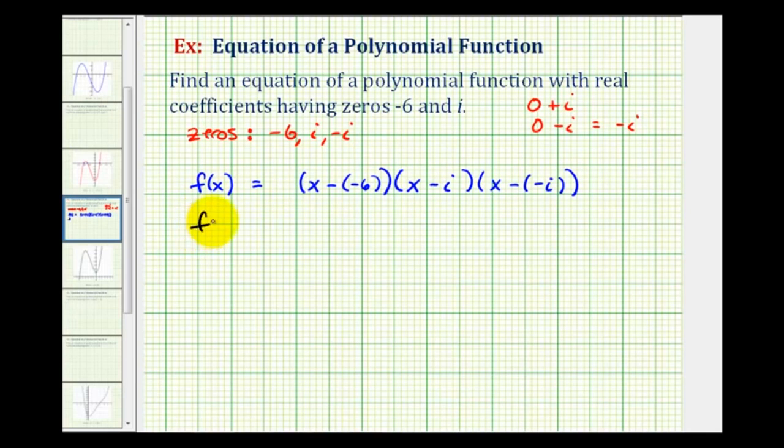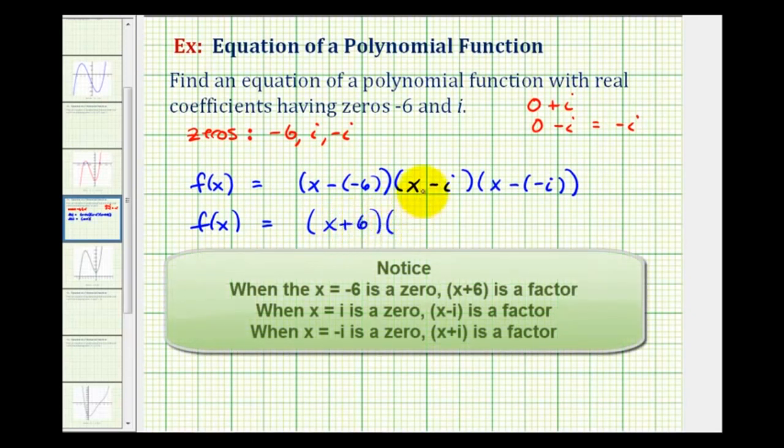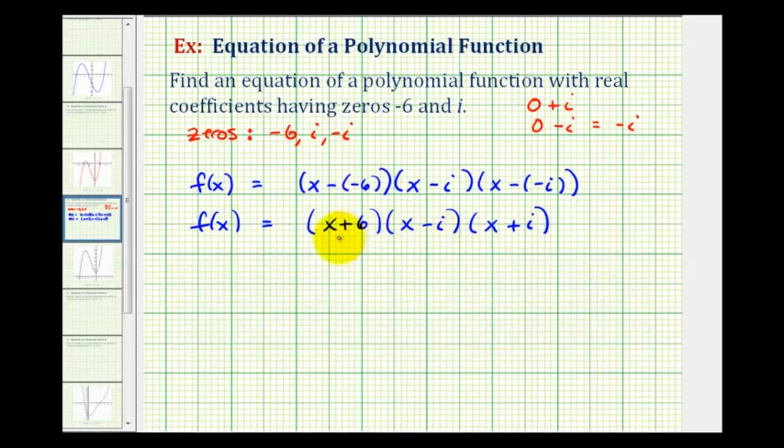So our function f(x) would have a factor of x plus six, we'll leave this as x minus i, and we'll write this as x plus i. Now we're going to multiply these. We can only multiply two at a time. Normally we work from left to right, but because these two are conjugates, we're actually going to find this product first. And again, we can do this because multiplication is commutative, which means if we change the order of the multiplication, it does not change the result.